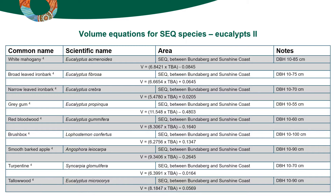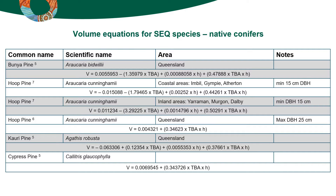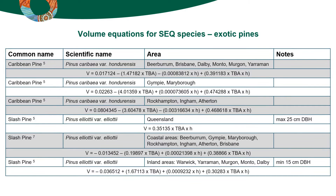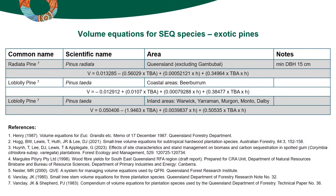Please pause the video to copy them if required. In these equations, V is the stem volume under bark in cubic metres, DBH is the diameter at breast height in centimetres, H is the height in metres, and TBA stands for the tree basal area in square metres.